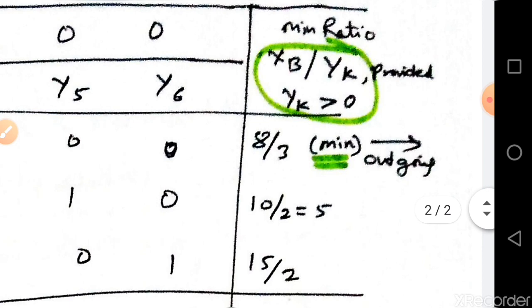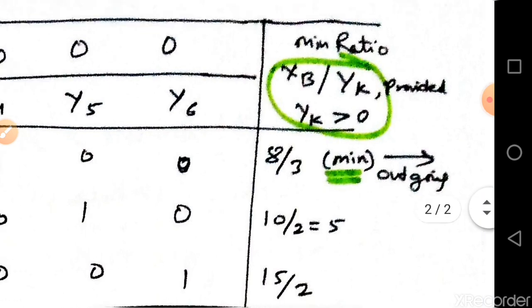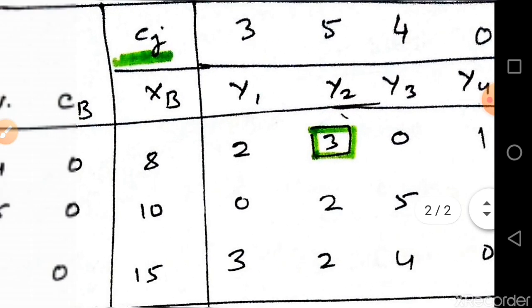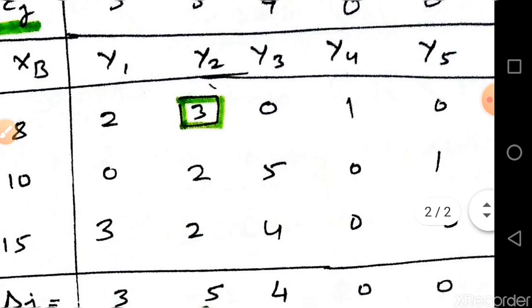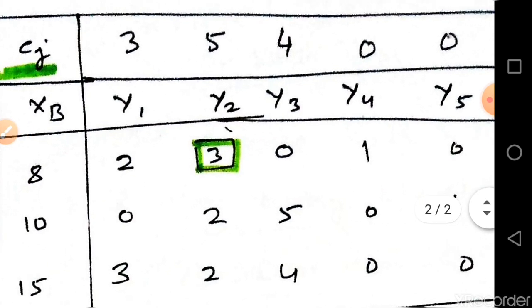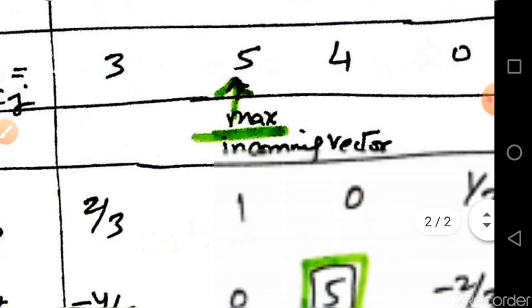Now we test for the optimal solution. We check the delta_j row and choose the maximum delta_j. We can see that 5 is the maximum delta_j, so y2 is the incoming vector entering the basis. Calculate the minimum ratio: 8 divided by 3 is the minimum, so y4 is the outgoing vector. The intersection element of the incoming row and column is the pivot element.